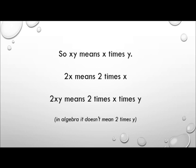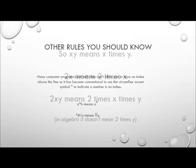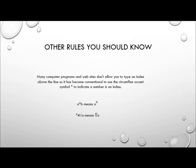So in algebra, xy means x times y, and 2x means 2 times x. 2xy means 2 times x times y — it doesn't mean 2 times y. We're not married to the idea of having x and y; it is common to use them, but I'm going to use a and b just to show that we can use any letter of the alphabet in algebra, including x and y.